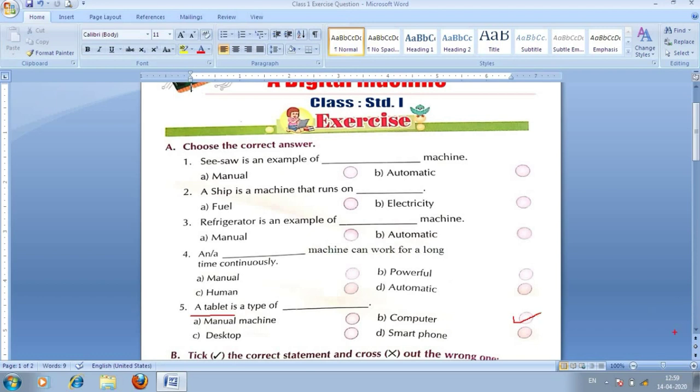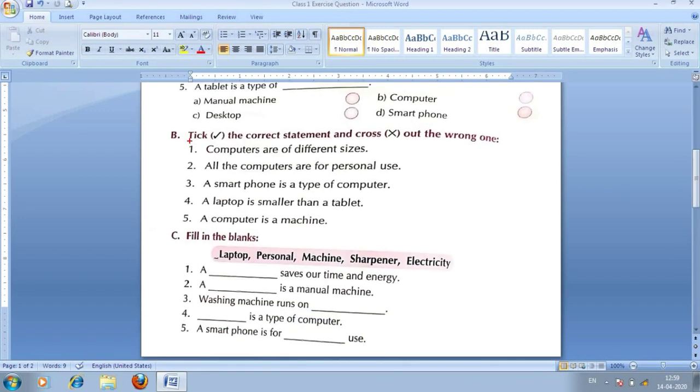Let's see. Next, section number b. Tick the correct statement and cross out the wrong one. It means, babu, kaha raha hai ki, sahi statement pe, sahi ka nishan laga hai. Aur, wrong statement pe, matlab, galat statement pe, galat ka nishan laga hai. So, let's see.